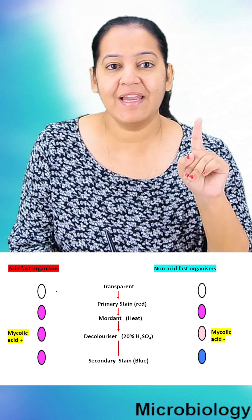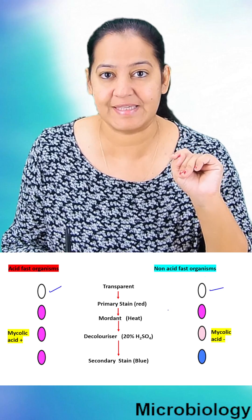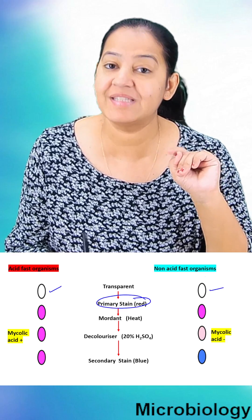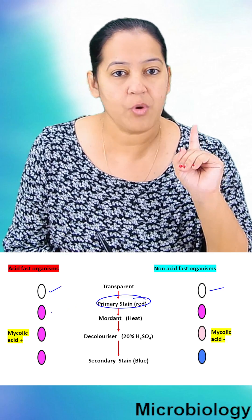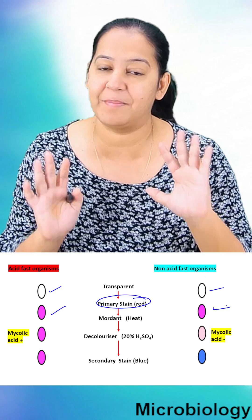There are four steps. Basically all bacteria are transparent. The first step we give a primary stain which is any stain red in color like Carbolfuchsin. So all the bacteria take the primary stain and they become red in color.